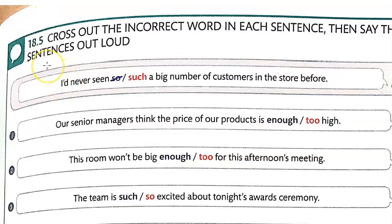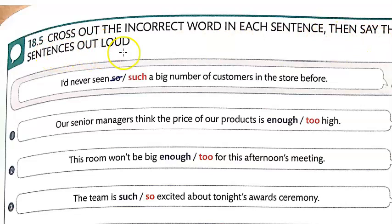Alright, so we have 12 sentences. This is our last lesson in the workbook, 18.5. You're going to cross out the incorrect word in each sentence, then say the sentences out loud. You're going to write the sentences out, and there are 12 of them, so you're going to have to pause the video several times here.